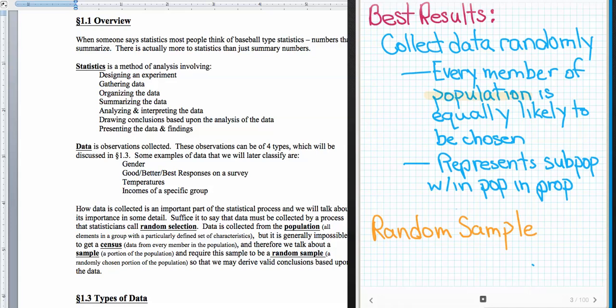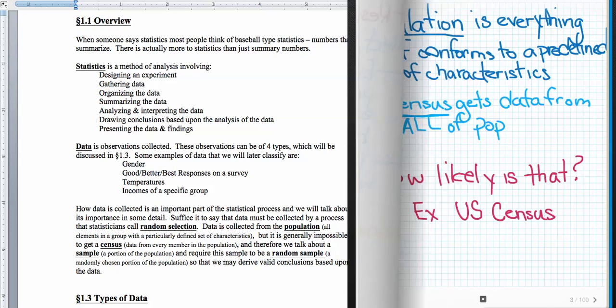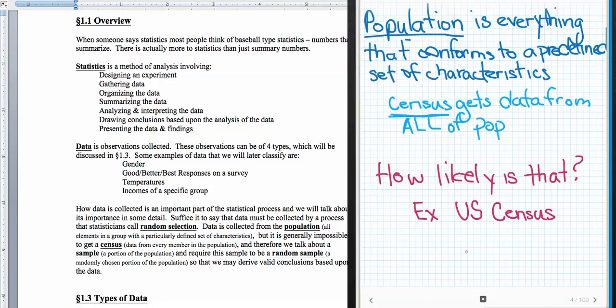And that leads us to our next topic, which is what a population is versus what a sample is. First of all, population is everything that conforms to a predefined set of characteristics. So when we sit down to design an experiment or design an observational study or decide we want to collect information, we say who or what are we going to be collecting this information about. That defines our population. And if we were able to get all the information, then what we would have would be a census.